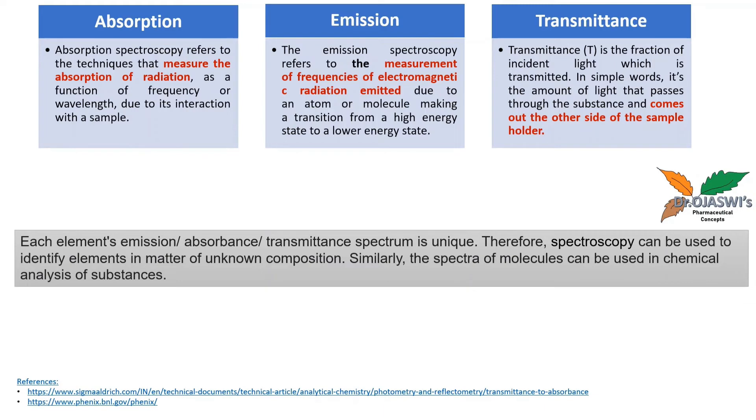Each element's emission, absorbance, and transmittance spectrum is unique. That means it is the fingerprint of that particular chemical structure. Therefore, spectroscopy can be used to identify elements in matter of unknown composition. So it is used for qualitative analysis. Similarly, the spectra of molecules can be used in chemical analysis of substances. Qualitative as well as quantitative applications are there with respect to all these spectroscopic techniques.